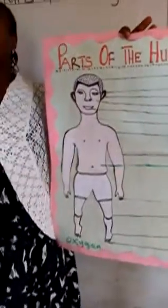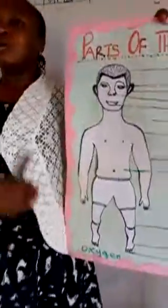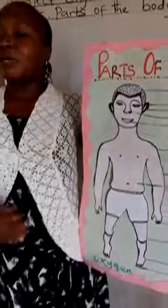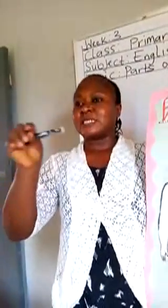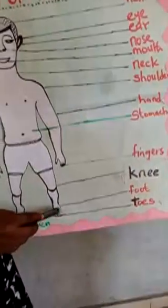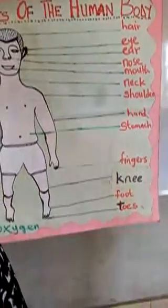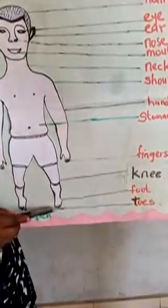The stomach. This is my stomach. Touch your stomach. After eating, you can see yourself rubbing your stomach. Also the fingers. Show me your fingers. This is my fingers. We have ten fingers. This is the knee. Show me your knee. This is my knee. We also have the foot. Show me your foot. This is the foot and the toes.